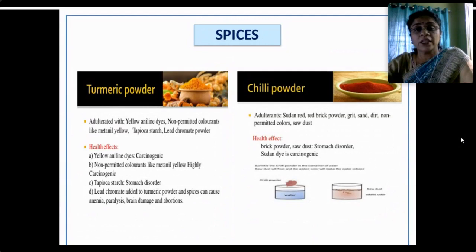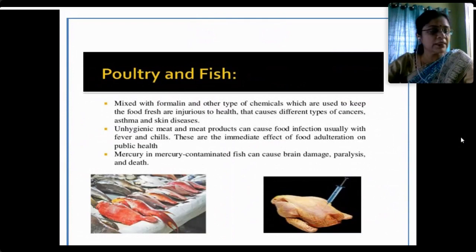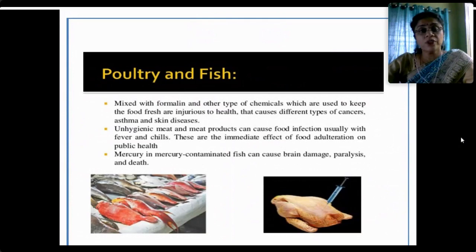Turmeric powder, used daily in our kitchens, is adulterated with non-permitted colorants like metanil yellow, starch, lead chromate powder and others. Chili powder is commonly contaminated with red brick powder, Sudan dye, sand, dirt and non-permitted colors. Poultry and fish products are mixed with formalin and other chemicals used to keep food fresh, which are injurious to health and cause different types of cancers, asthma and skin diseases. Mercury-contaminated fish can cause brain damage, paralysis and even death.